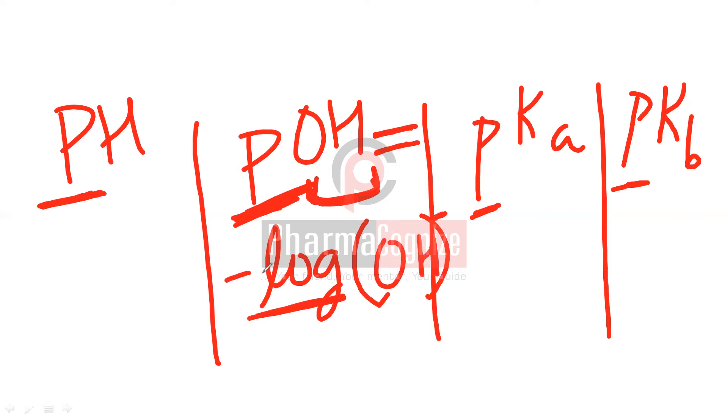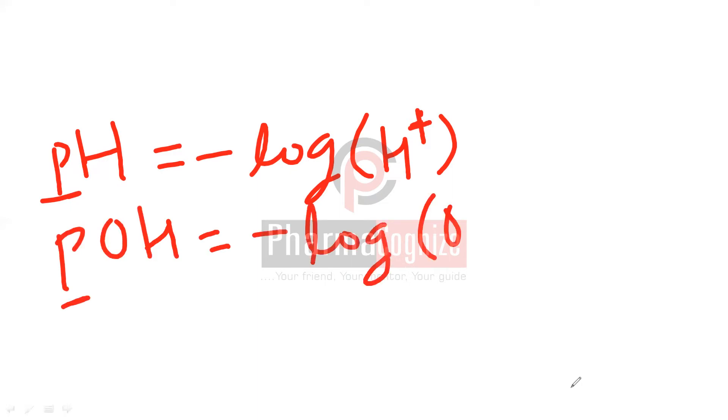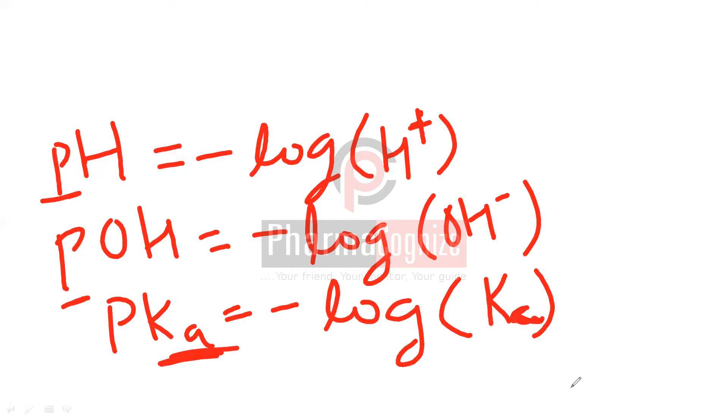If we talk about pH, pH would be minus log of H plus concentration. Then pOH would be minus log of OH minus concentration. Then pKa would be minus log of Ka. Then pKb would be equal to minus log of Kb. This is about the formula for pH, pOH, pKa and pKb.